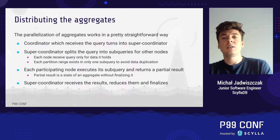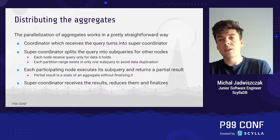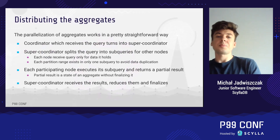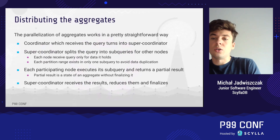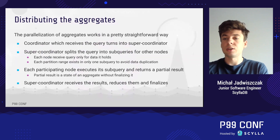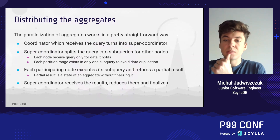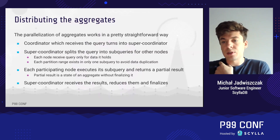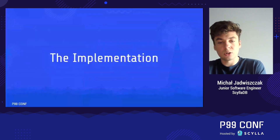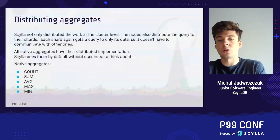Summing up, the general idea is pretty simple. When a coordinator receives an aggregate query, it becomes a super coordinator in charge of workload distribution. It splits the query into sub-queries for the other nodes. Each node performs aggregation on its local data and returns the partial result to the super coordinator. The super coordinator then merges the results by reducing them. The advantage is clear: nodes send only a single result instead of the whole dataset, and the work is spread across all nodes rather than done by a single node.